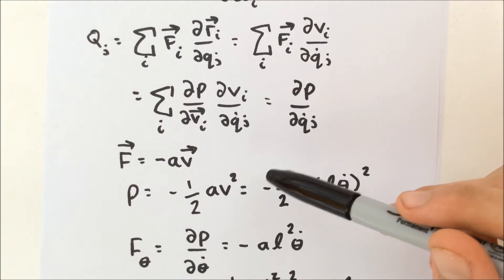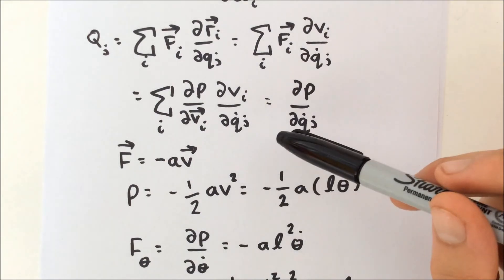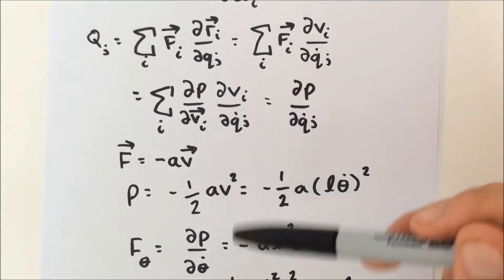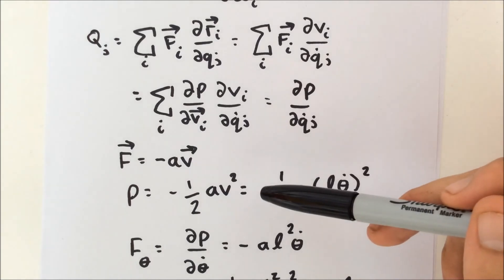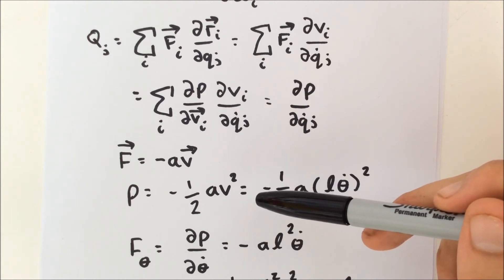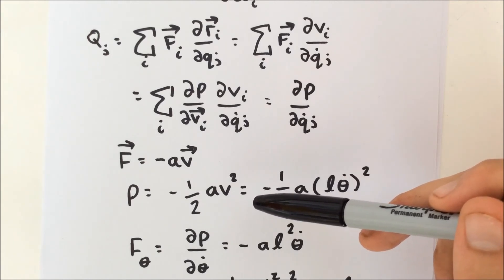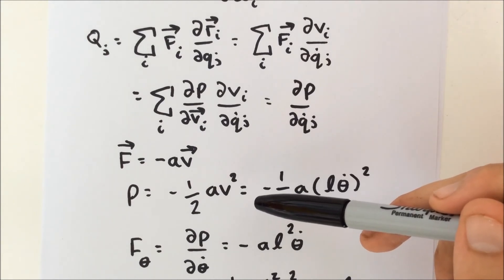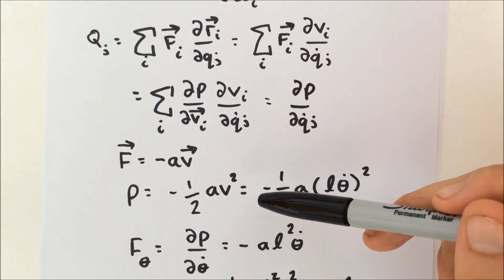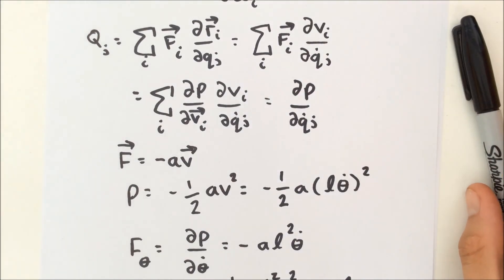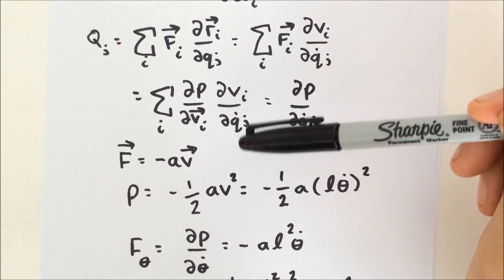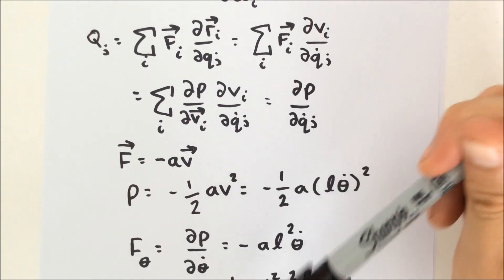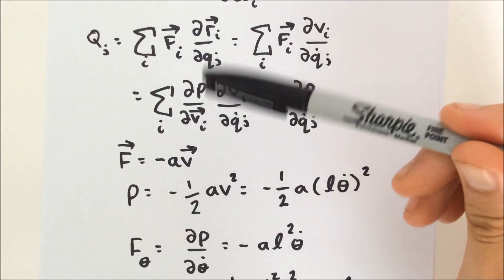In this example, we included all forces we could in the Lagrangian, leaving only the dissipative force for the power function. One could include non-dissipative forces in the power function as well, but one must be careful not to include the same force twice. It is generally a good idea to include as much as possible in the Lagrangian, leaving only forces that cannot be included there for the power function. This has the added advantage that one can still examine the Lagrangian for first integrals if the power function does not depend on a particular coordinate.